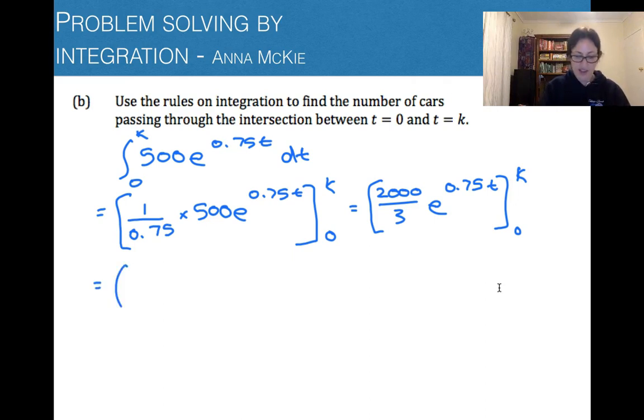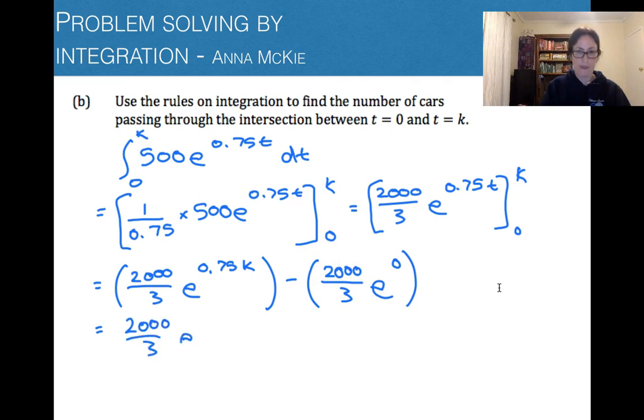We're going to sub in now for k and 0. So 2,000 on 3, where you see a t, you're going to put a k. And subtract off now where you see a t, you put in a 0. E to the power of, well, that'll be 0. Tidying this up, anything to the power of 0 is 1. So we're just left with that constant there. We've got 2,000 on 3, e to the power of 0.75k, take away 2,000 on 3.